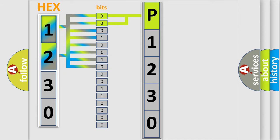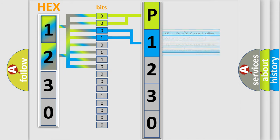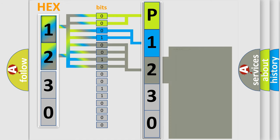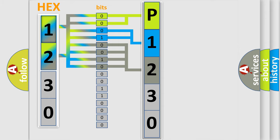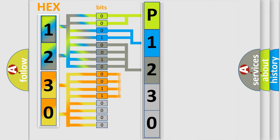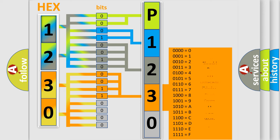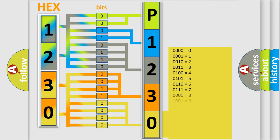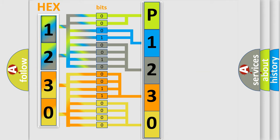The next two bits determine the second character. The last bits of the first byte define the third character of the code. The second byte is composed of a combination of eight bits. The first four bits determine the fourth character of the code, and the combination of the last four bits defines the fifth character. A single byte conceals 256 possible combinations.